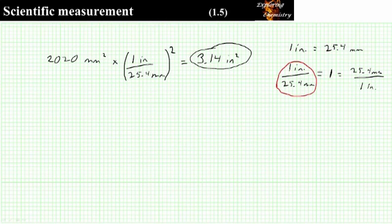I would like you to pause this presentation now and confirm that 3.14 in² equals 0.0218 ft². The equality you're going to need is that 1 foot equals 12 inches.